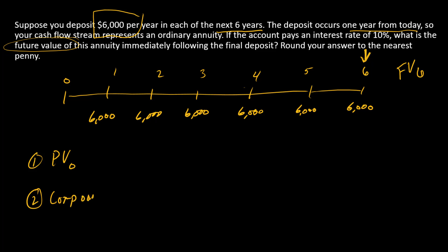Calculate the present value at time zero, and then compound forward to find the future value. So the present value at time zero is equal to the payment amount times an annuity factor. In the annuity factor we've got a discount rate of 10% and an exponent of six because there are six of these payments.